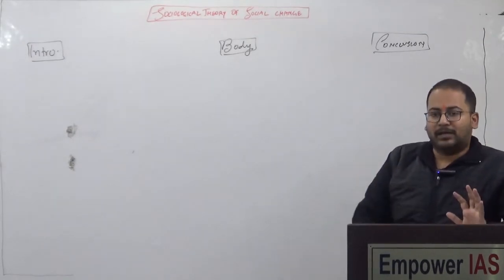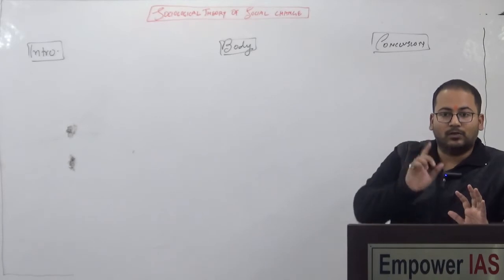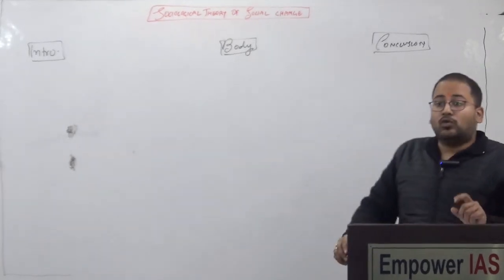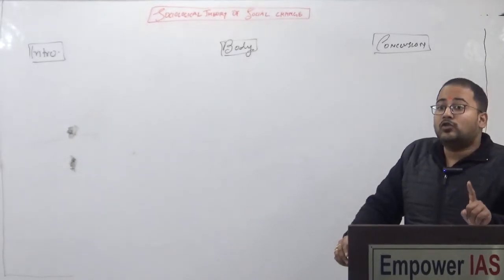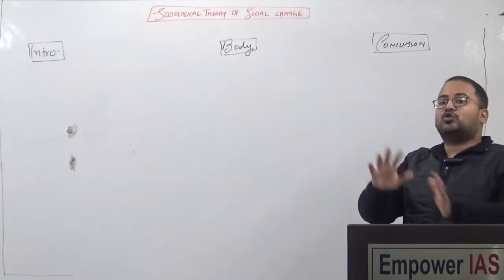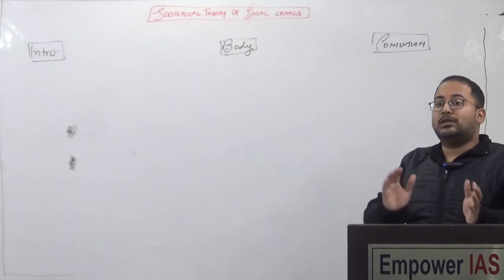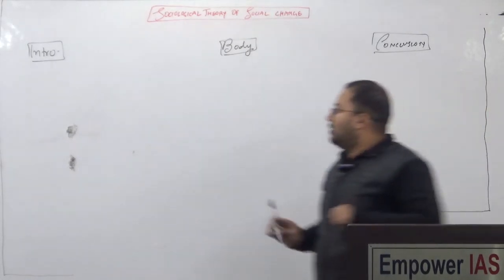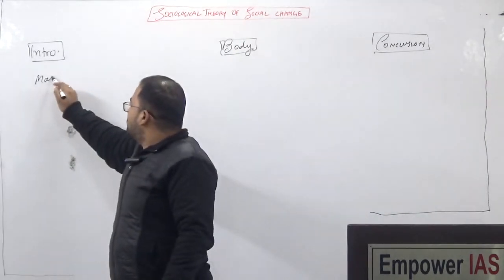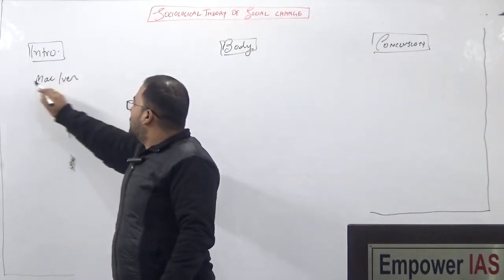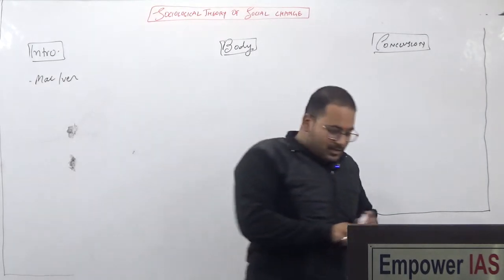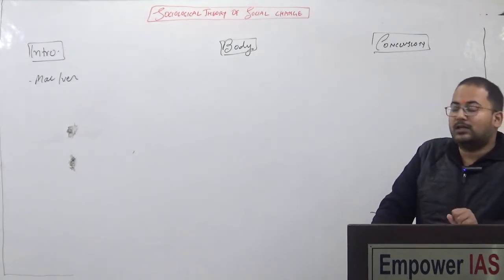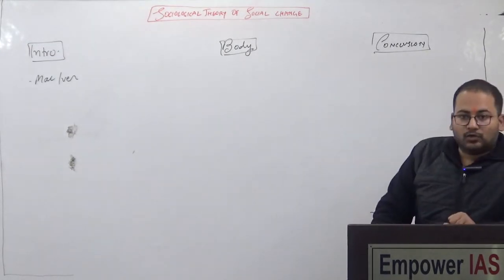We can't define anything in a simple manner; we have to take the reference of a particular thinker and then define what do you mean by social change. So, definition of social change — according to MacIver, change in the social relationship is known as social change. That should be the definition of social change.